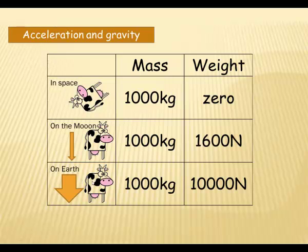Now on Earth, we know the gravitational constant is 10 Newtons per kilogram, so her mass hasn't changed. Her mass still stays the same. But we now know that her weight will be 10 times 1,000, which is 10,000 Newtons. So you can see the mass never changes. The weight changes according to how much gravity is acting upon the body. In this case, the body of the cow.